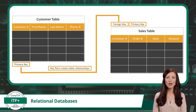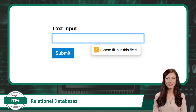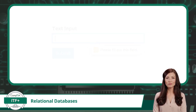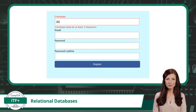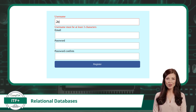Then we have the not null constraint — a rule that says a column must always have a value; it can't be left empty. You have no doubt come across this constraint when filling out a web form. There is also the check constraint, which enforces specific conditions on column values. For instance, you can use it to make sure an entry meets a specific requirement before it is accepted into the database. These are just a few types of constraints, but hopefully you got the idea.